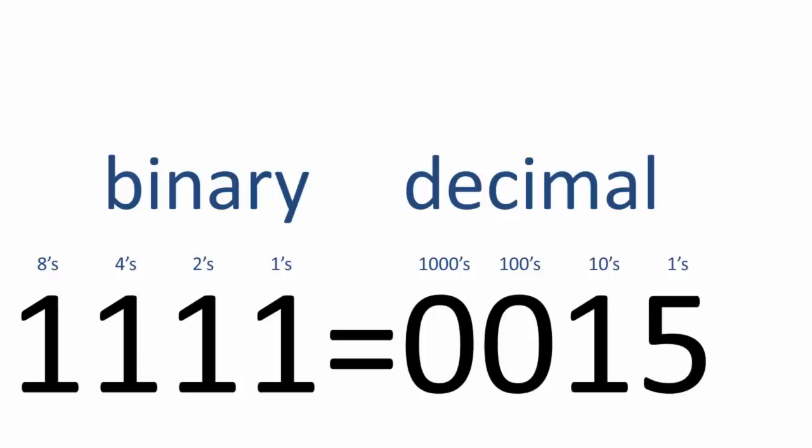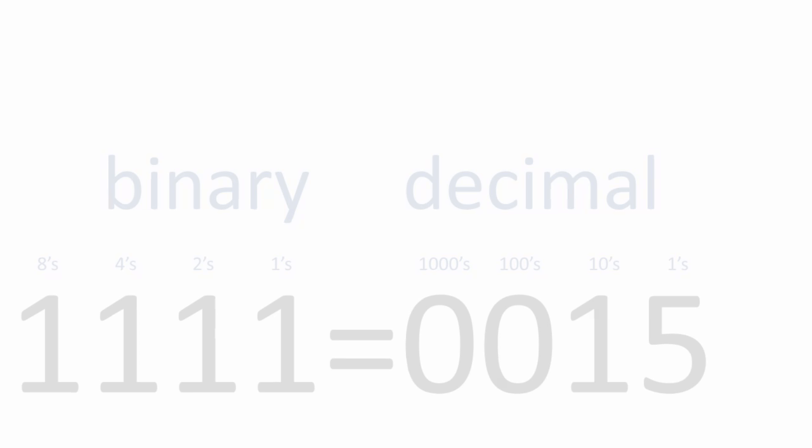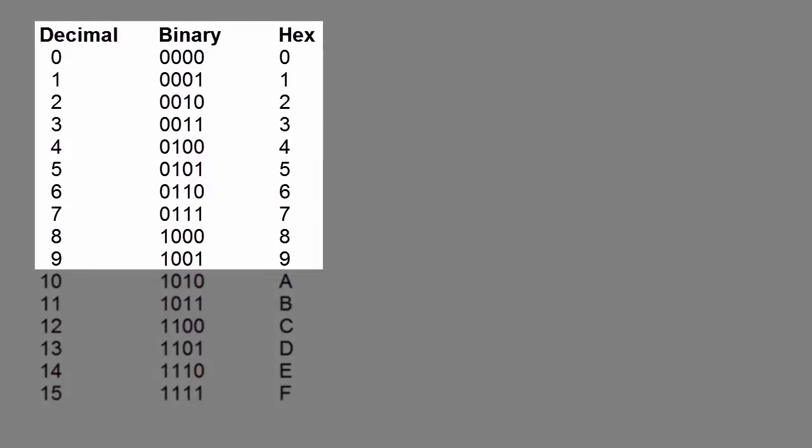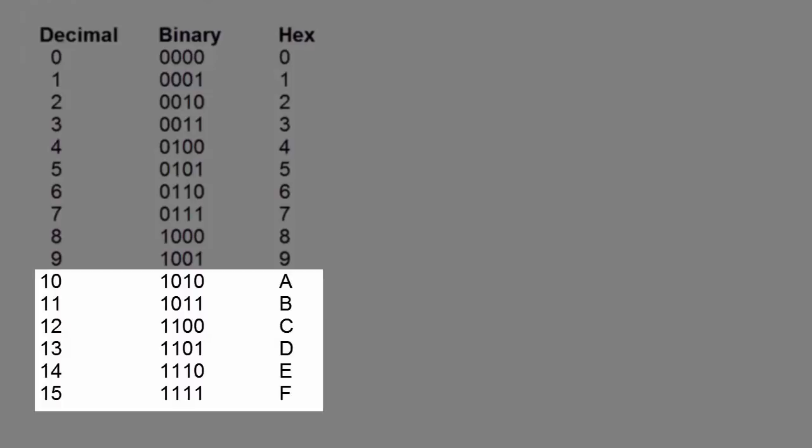there is another numbering system to bridge the gap, which uses base 16. It's more commonly referred to as hexadecimal, or just hex for short. Hexadecimal requires 16 states, so we need to introduce some new names for the units. We can use 0 to 9 for the first 10, then the first 6 letters of the alphabet for the rest.